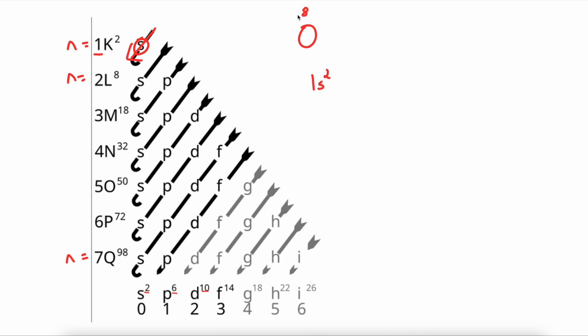This will subtract 2 electrons from our oxygen, leaving us with 6 remaining. We then go diagonally once more. And this S is in the second energy level. So we write 2S2.